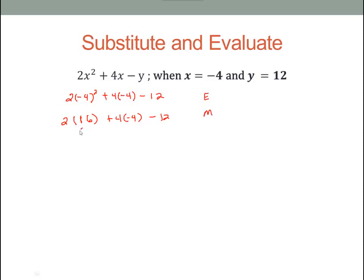Then we have multiplication. We have multiplication in a couple of places, so we'll go ahead and take care of both of those. We have 2 times 16, which is 32. And then we have positive 4 times negative 4, which is negative 16. So we can just write that as minus 16.